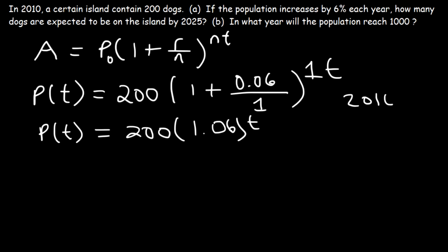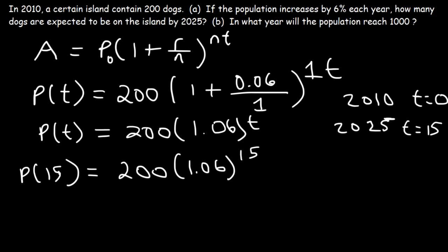Now in the year 2010, T is equal to 0. Because in that year we have the initial population, which was 200. So in 2025, 15 years later, T is going to equal 15. So we need to find the population when T is 15. So it's 200 times 1.06, raised to the 15. And so that's going to be 479.3. So there's going to be about 479 dogs in the year 2025.